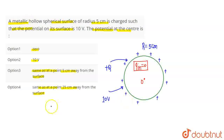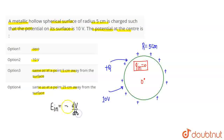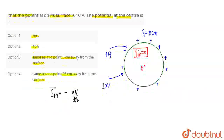Now, what happens if I charge this hollow spherical surface? The electric field is given by E = −dV/dr. This means the electric field points in the direction of decreasing potential — in the direction of the electric field, the potential always decreases.